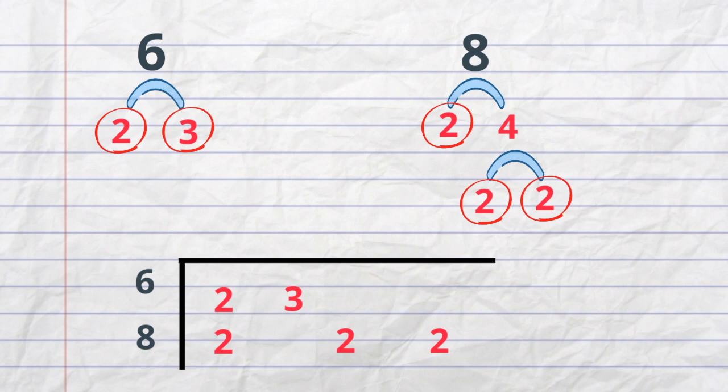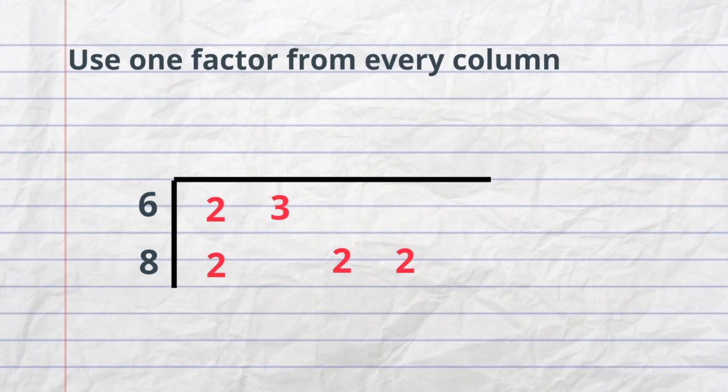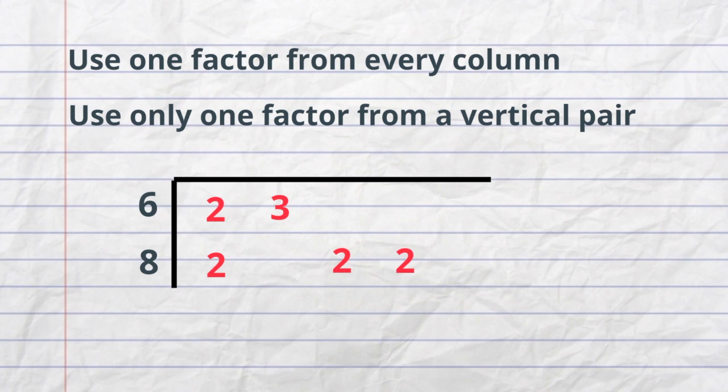Now what I need to do is apply these two simple rules. First, use one factor from every column. Second, use only one factor from a vertical pair.